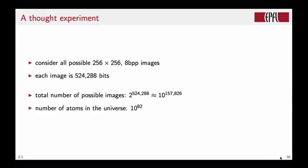Let's take a different approach. Assume we can collect all images that exist in the world—pictures, drawings, and so forth—and list them in a massive encyclopedia. We can indicate each image by giving its cardinal number in the list. Current estimates say about 50 billion images are on the internet. Let's assume all are encoded at 8 bits per pixel with size 256 by 256.